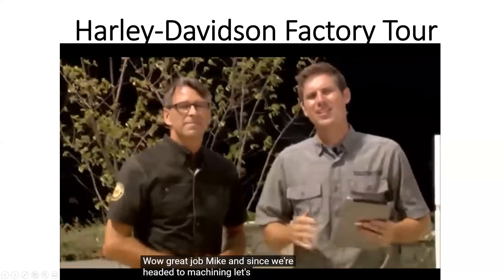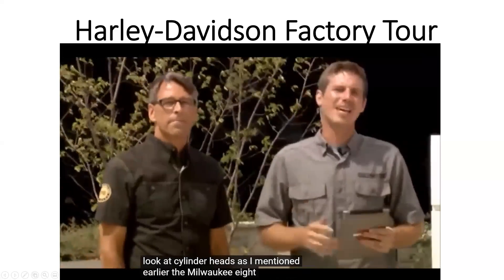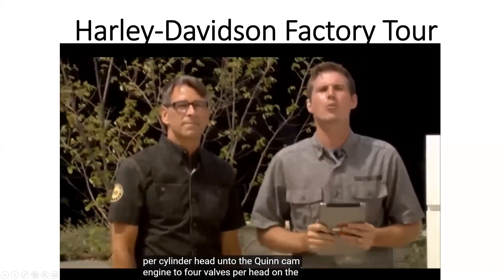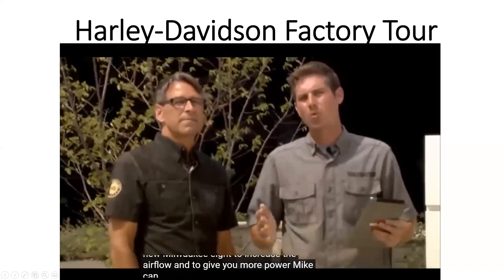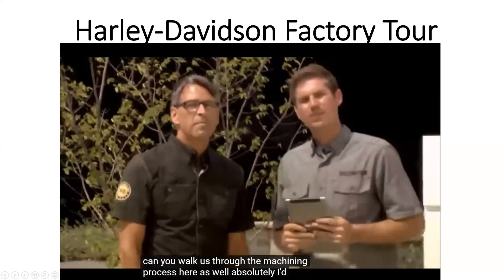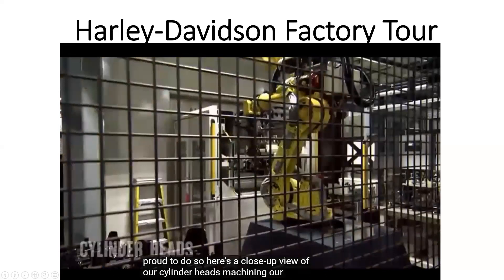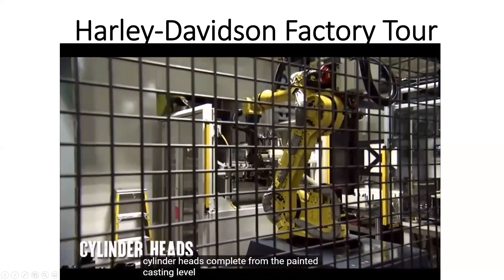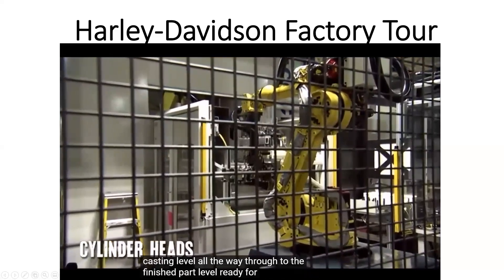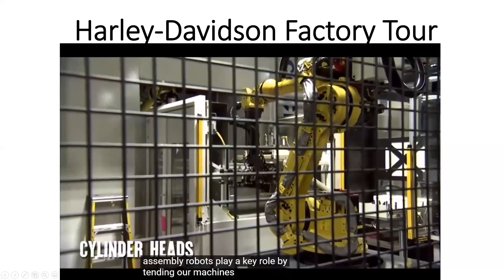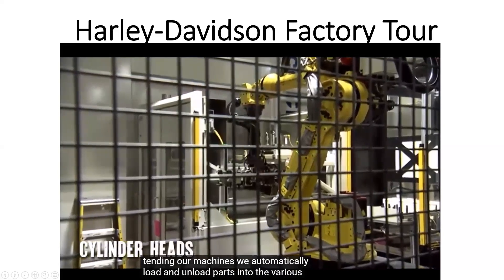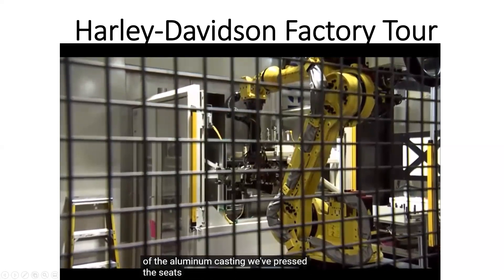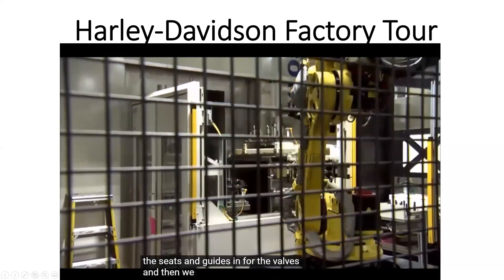Since we're headed to machining, let's take an inside look at cylinder heads. The Milwaukee 8 name pays tribute to the four valves on each cylinder head — we moved from two valves per cylinder head on the twin cam engine to four valves per head on the new Milwaukee 8 to increase airflow and give you more power. Here's a close-up view of our cylinder heads machining — our single largest area of investment. In this area, we machine cylinder heads complete from the painted casting level all the way through to the finished part level, ready for subassembly. Machining is a three-step process: we machine the aluminum casting, press the seats and guides in for the valves, and then machine those steel seats and guides.